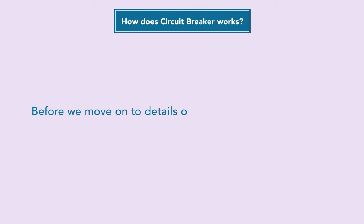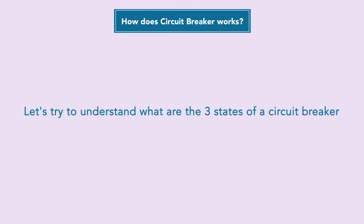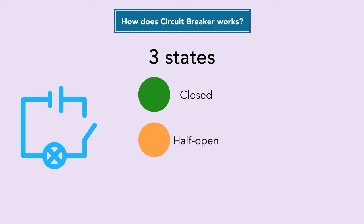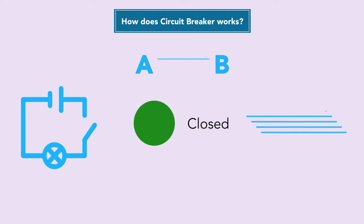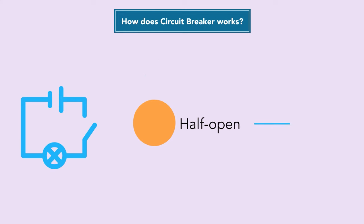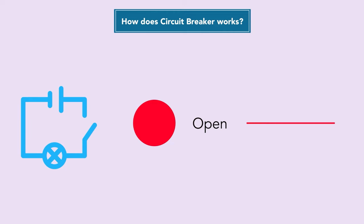There are three different states of a circuit breaker: closed, half-open, and open. By default, a circuit breaker stays in the closed state, meaning traffic flows from service A to service B normally. If the circuit breaker is half-open, some traffic can pass through for testing purposes to check if the downstream service is healthy. If the circuit breaker is open, no traffic goes through, and the calling service is immediately returned a failure indicating the target service is not available.